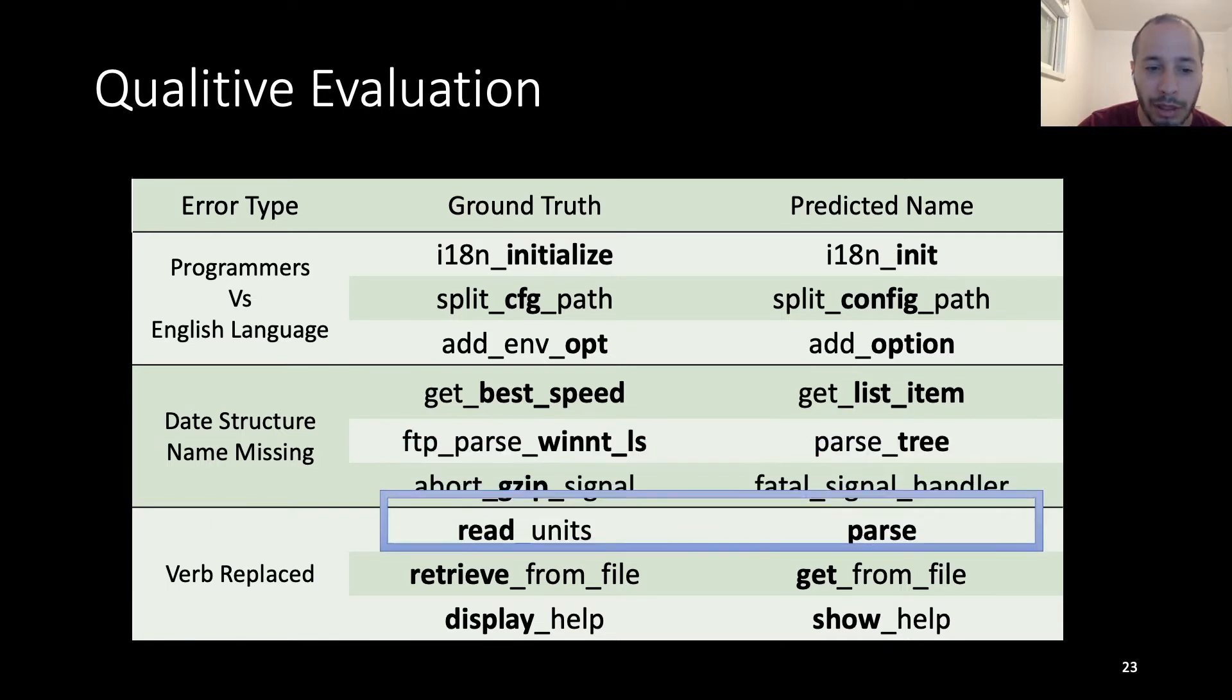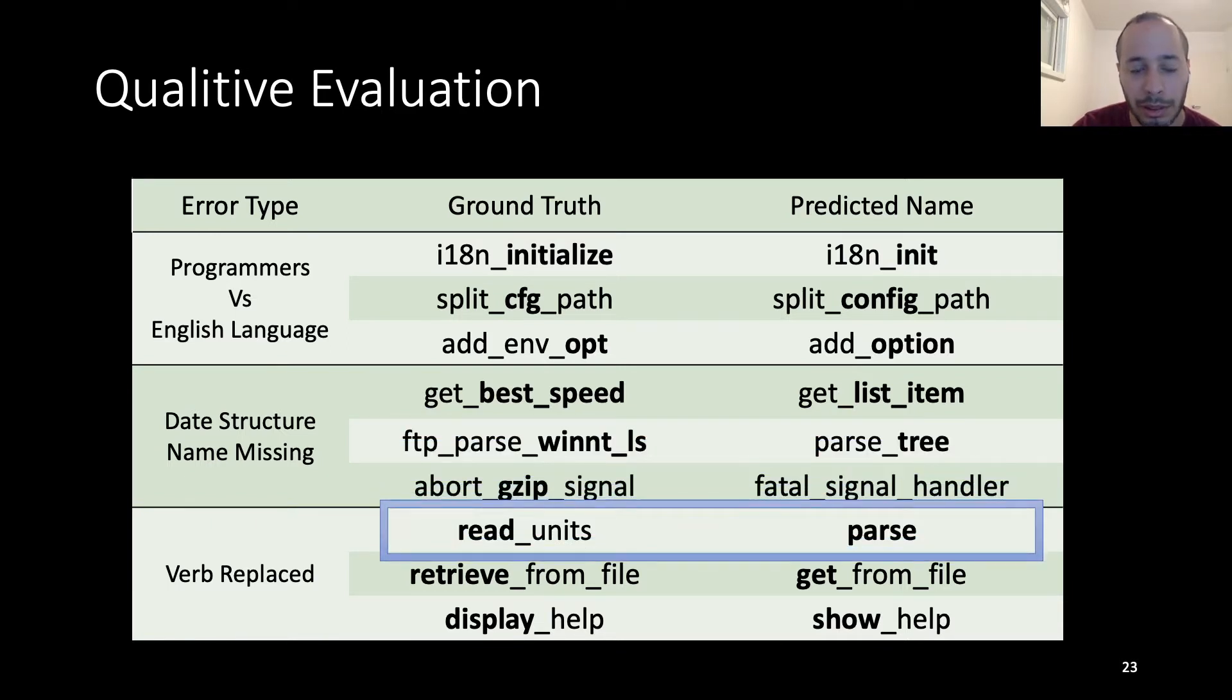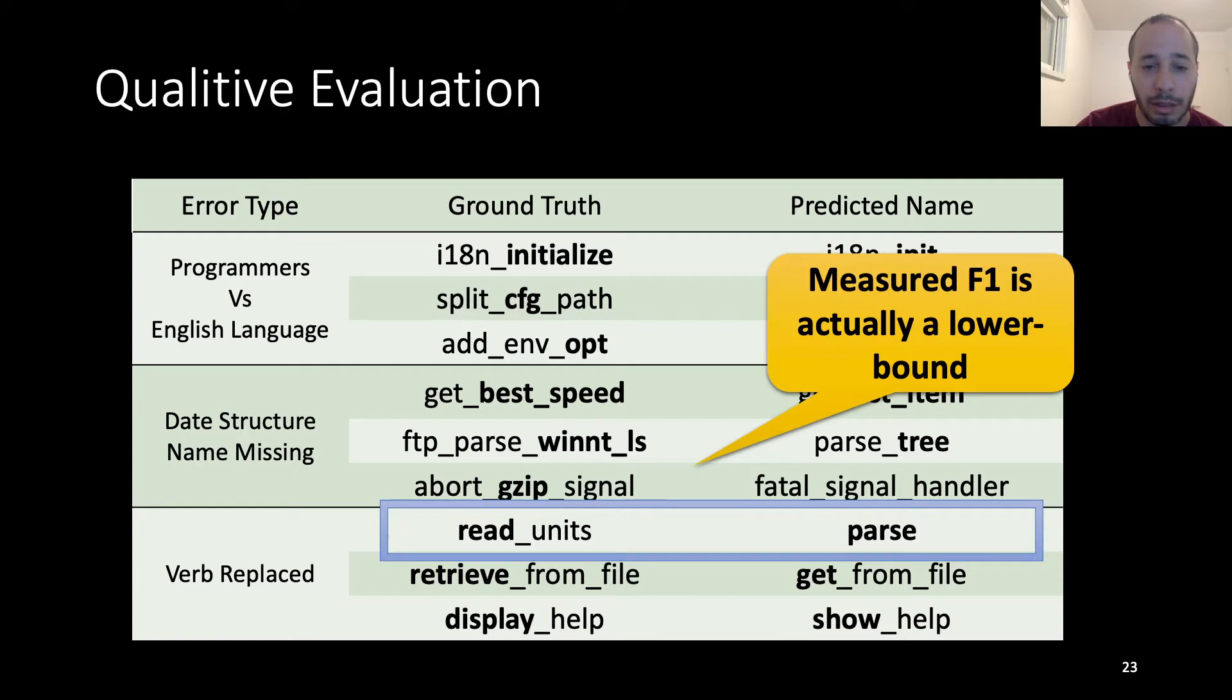The third group is just verb replacements. We see read replaced by parse, retrieve replaced by get, and display replaced by show. At the end of this process, we concluded that the measured F1 score is actually a lower bound for the usefulness of our approach, because these predicted names are very useful for the programmer. It's also not customary to fix these results manually, and so we left the results as they were.